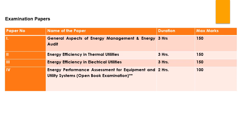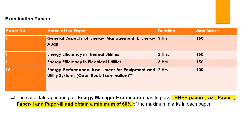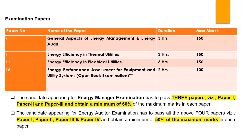Now let's look at the examination papers. For the energy manager exam, you need to qualify papers one, two, and three. For the energy auditors exam, you need to clear all four papers. The first three papers are three hours in duration; the fourth paper is two hours. Maximum marks for the first three papers are 150 each, and the fourth paper is 100 marks. You need at least 50% — that is 75 out of 150 for the first three papers, and 50 out of 100 for the fourth paper.